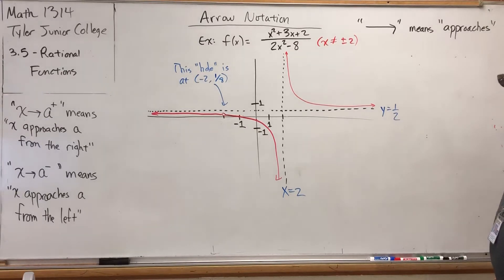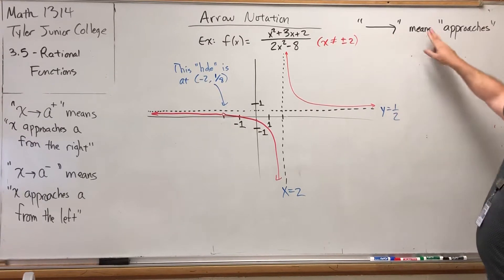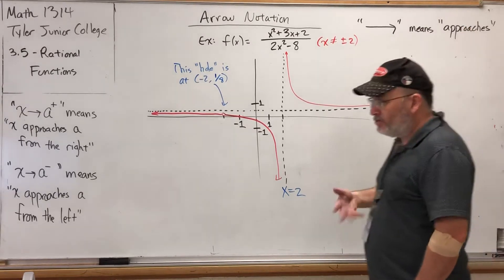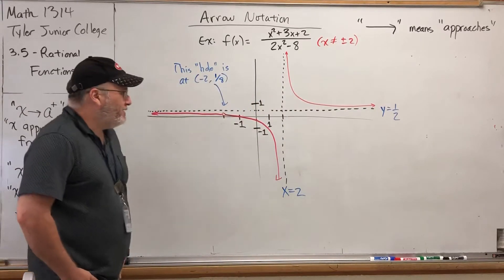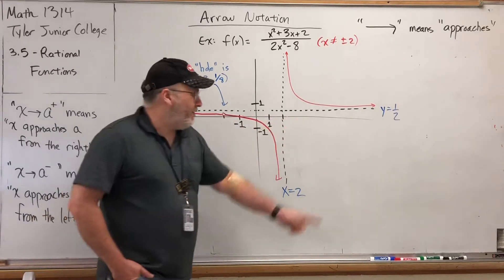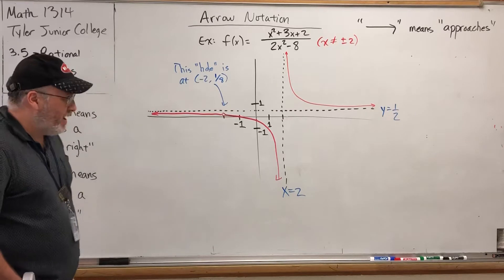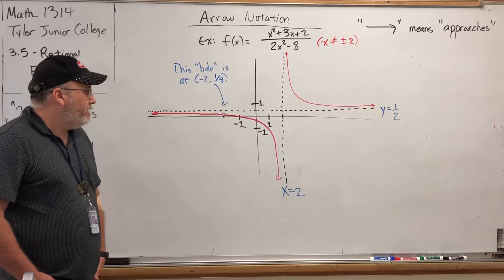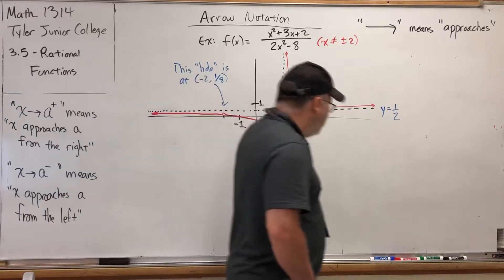We're going to be looking at something called arrow notation. If you see a single-line arrow, we're going to read that as the word 'approaches,' meaning that I get closer to it without ever actually reaching. This graph has a horizontal line at y equals 1/2, and a vertical line at x equals 2 that are not parts of the graph, but serve as boundaries — the graph approaches those lines.